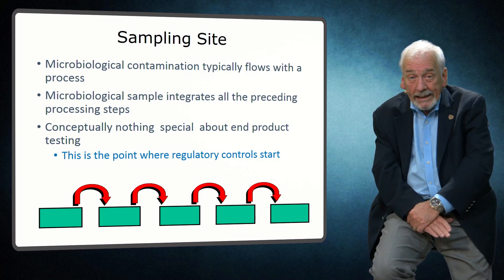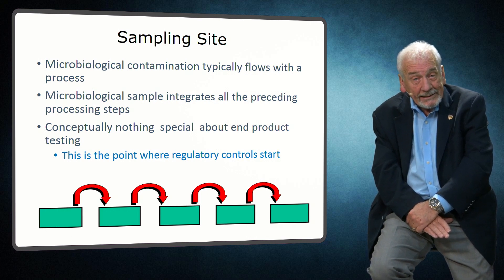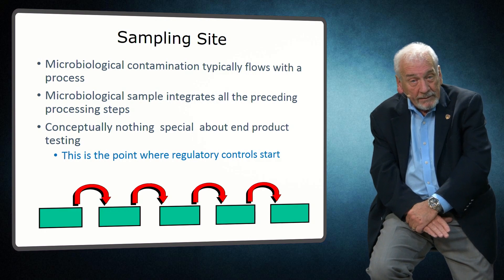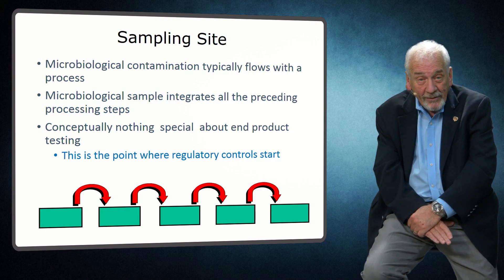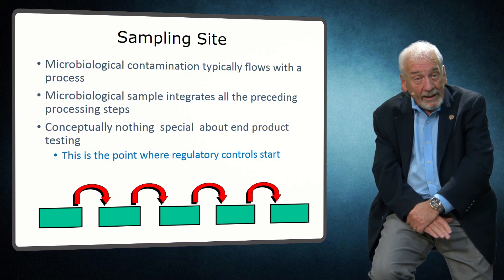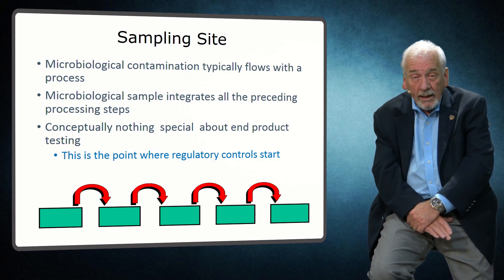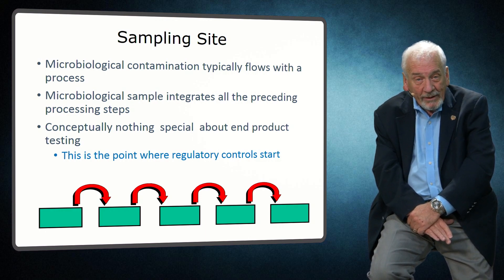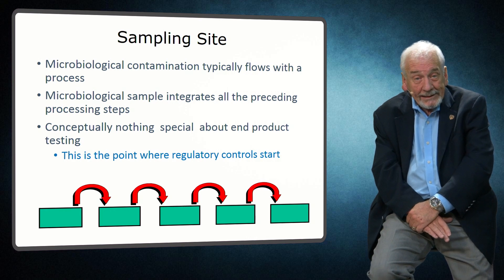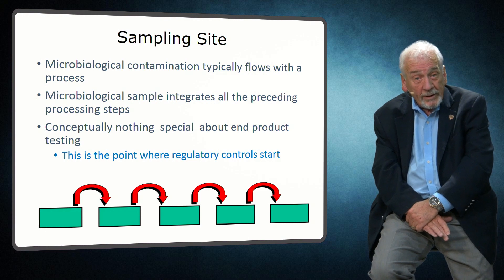Likewise, an inline sample reflects the sum of all the factors that influence the product status up to that point in the processing. Sampling at the end of manufacturing is conceptually the same — it is the integrated sum of all the factors that impact the microbiological status of the product from receipt of ingredients to final packaging. However, most manufacturers view end product samples differently, reflecting the fact that this is generally the point in manufacturing where the food comes under regulatory control.